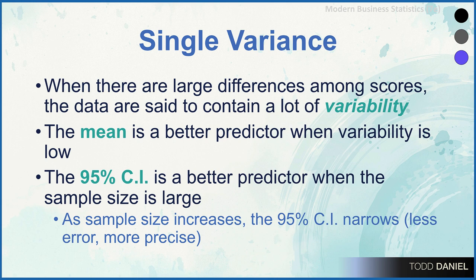Similarly, a 95% confidence interval — which gives us a range of confidence of where the mean would fall as we estimate from our sample to our population — is going to be a better predictor when your sample size is large. As your sample size increases, your confidence interval narrows. Just like having small amounts of variability around a mean, a narrow confidence interval is a much better predictor; it's more precise.